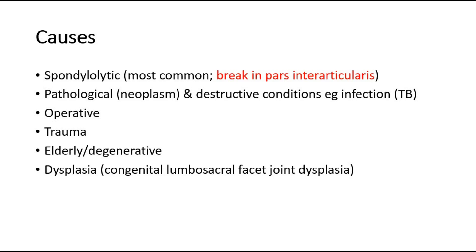Other causes include pathological causes like neoplasm and destructive conditions like TB infection; operative causes due to laminectomy for decompression; trauma; and elderly or degenerative type, which occurs in 25% of cases — this can be due to osteoarthritis or degeneration of the facet joints, usually at L4-L5. Dysplasia, for example congenital lumbosacral facet joint dysplasia, is seen in children.